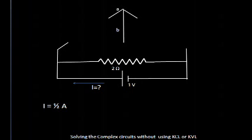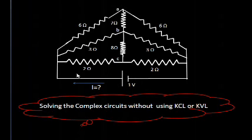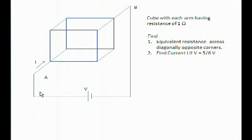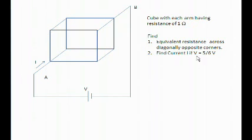Friends, this was a very complex network and with an easy method we have found the solution. Now let us move ahead to one more very interesting question that is very repetitively asked in competitive exams. The question involves a cube where each arm has a resistance of 1 ohm. We need to find the equivalent resistance across diagonally opposite corners and also find the current when voltage source V = 5/6 volt.